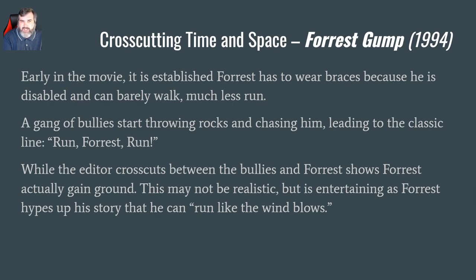Forrest is pretty much disabled as a little kid. He has to wear braces in order to walk and can't even run — he's not expected to run. And there's this classic scene where these bullies come up to him on bicycles, start throwing rocks at him, calling him names, and chasing him. Jenny yells out, 'Run, Forrest, Run.' And so Forrest starts to run the best he can with those braces on him.